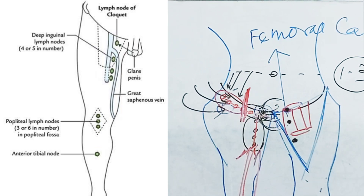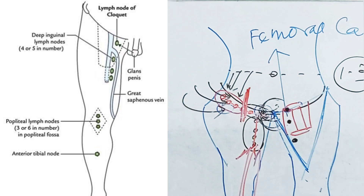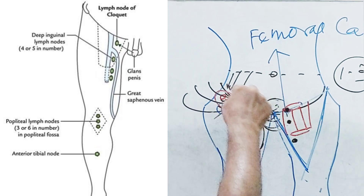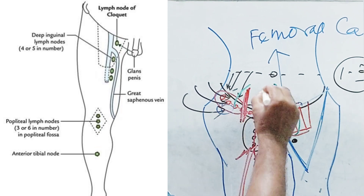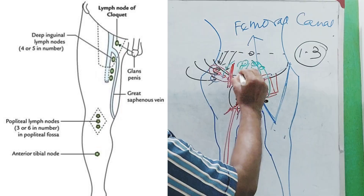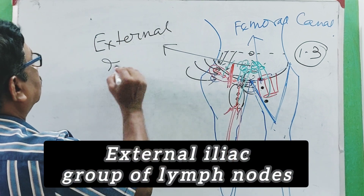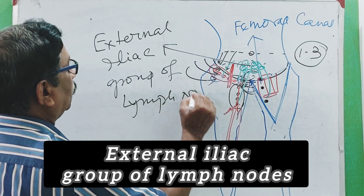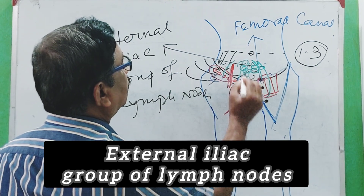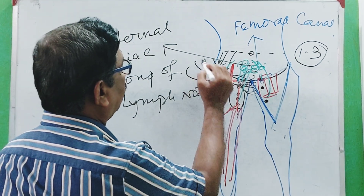These deep lymph nodes receive lymphatics from the structures deep to the deep fascia — that means the deep lymphatics are carried by the deep group of lymph nodes. All of these lymph nodes — the superficial horizontal and vertical groups and the deep group — pass into the abdomen and reach another group called the external iliac group of lymph nodes.